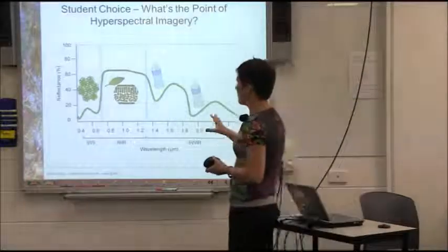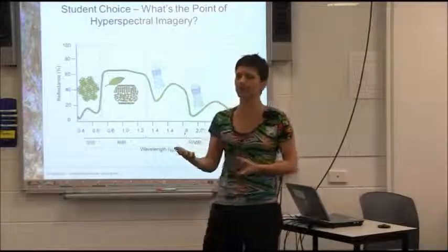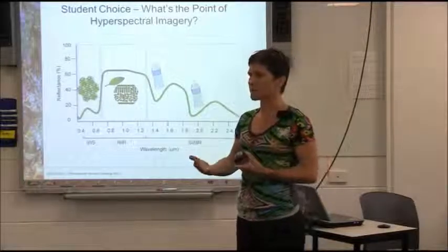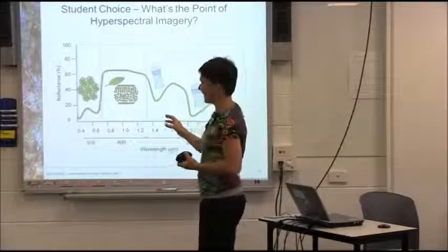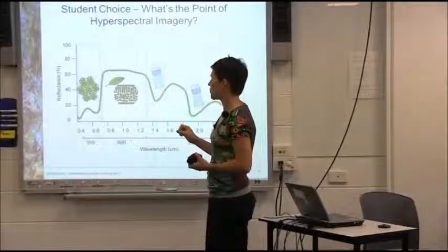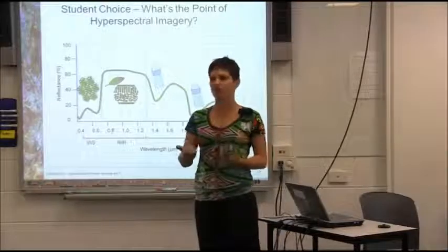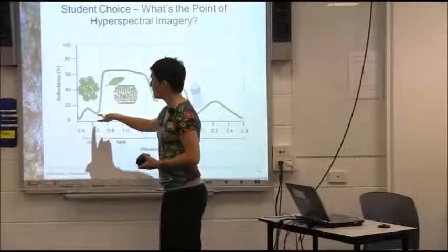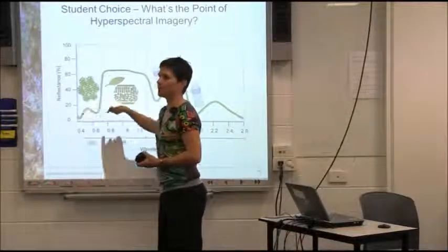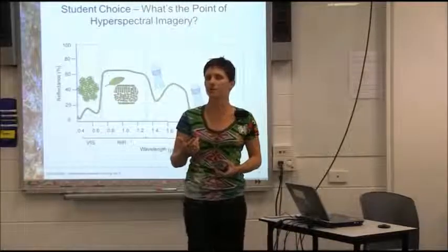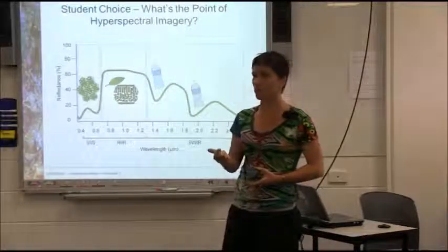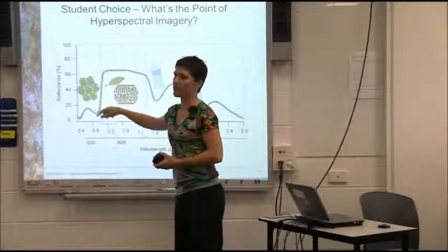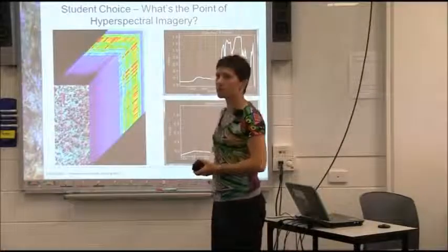So coming back to our standard vegetation spectral signature, and I'll just use vegetation here because it is quite simple to explain, but the same could be true for looking at water bodies or minerals. It comes down to understanding the features that you're interested in. So if I want to be able to measure the amount of pigments that I see in a particular area in an image, I need the fine detail around the blue and the red areas, because I know that that's where pigments, for example chlorophylls and carotenoids, are absorbing. So that's where I need a great deal of detail that this just simply doesn't provide me.